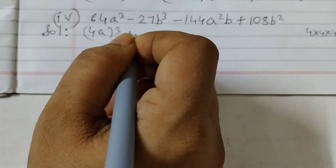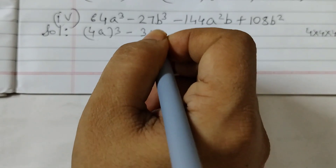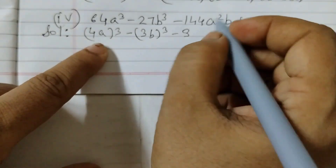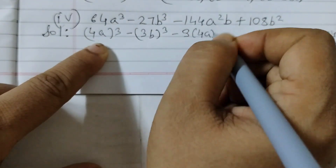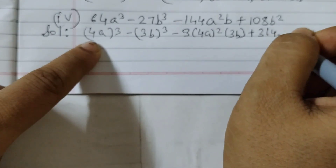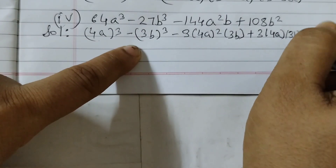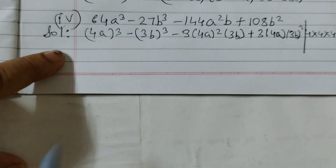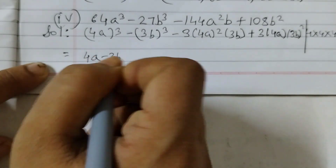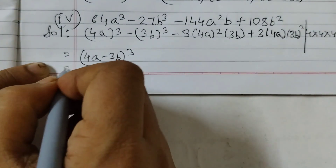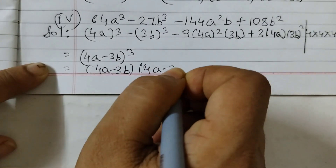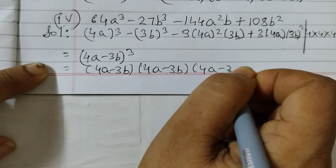27 = 3³, so 27b³ = (3b)³. Filling in: (4a)³ minus (3b)³ minus 3·(4a)²·(3b) plus 3·(4a)·(3b)². We identify a = 4a and b = 3b, so the answer is (4a - 3b)³, or written as (4a - 3b)(4a - 3b)(4a - 3b).